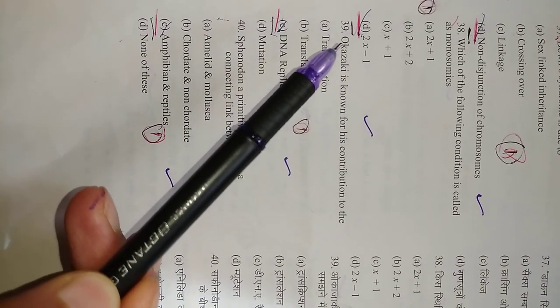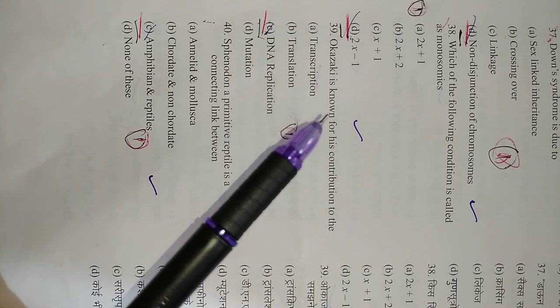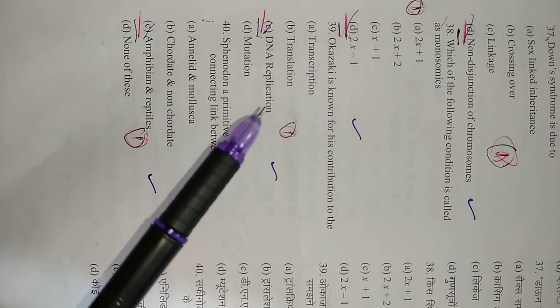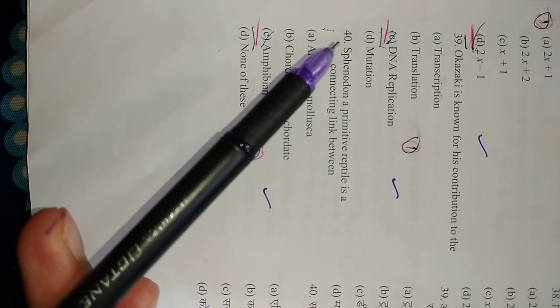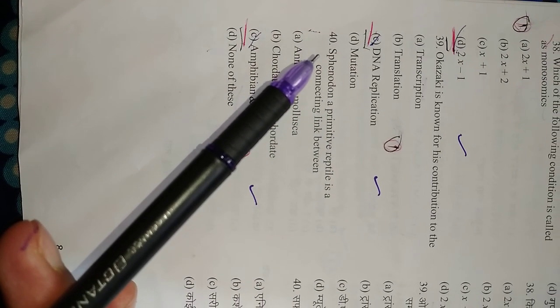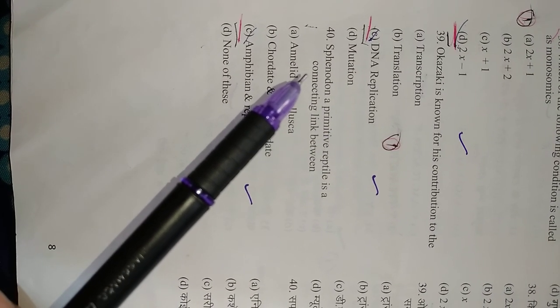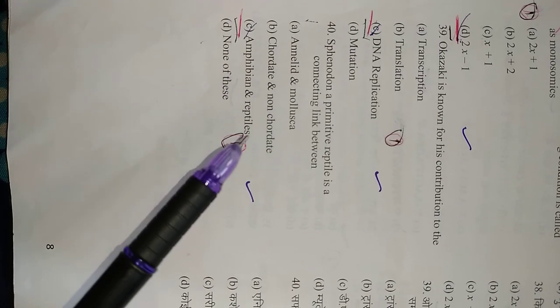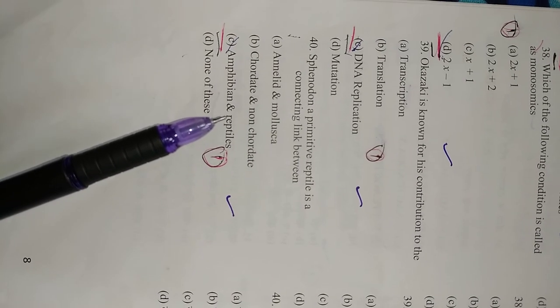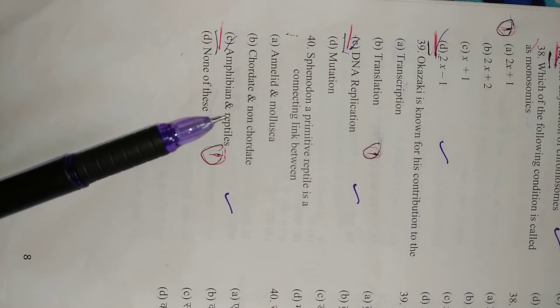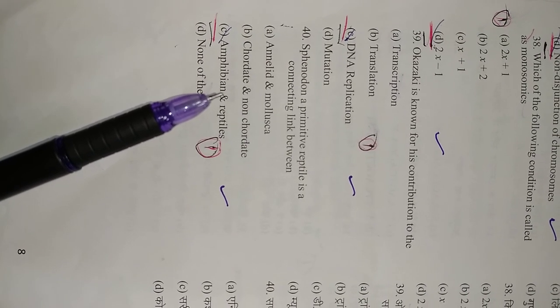Question number 39: Okazaki is known for his contribution to—as you have studied, Okazaki fragments are found in DNA replication. So right option is C. Question number 40: Sphenodon is a primitive reptile, a connecting link between amphibians and reptiles. As you have studied in evolution, the reptiles have evolved from amphibians, and Sphenodon is a reptile that has amphibian-like characters and reptile-like characters. So the right option is C.